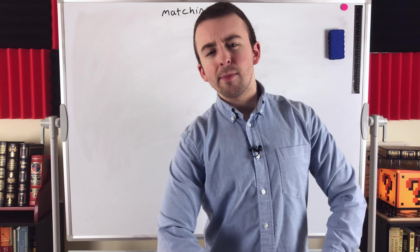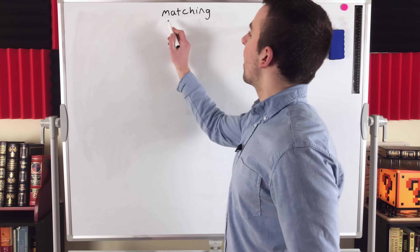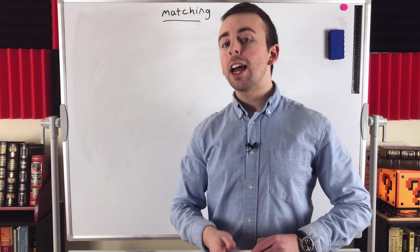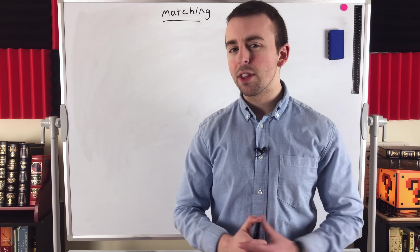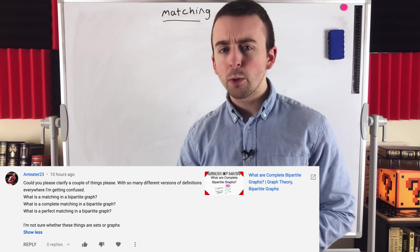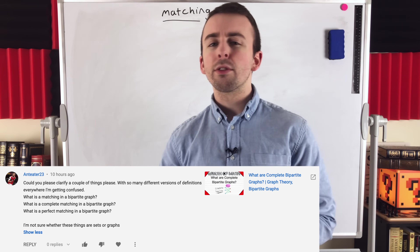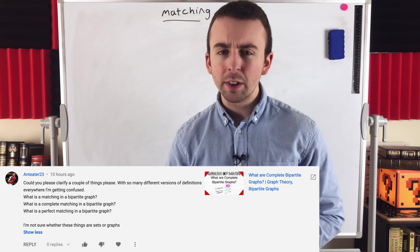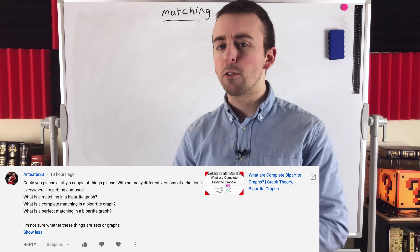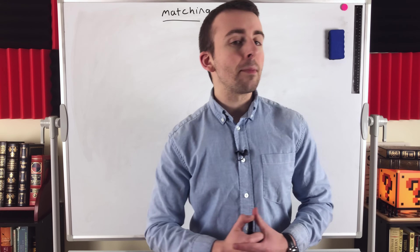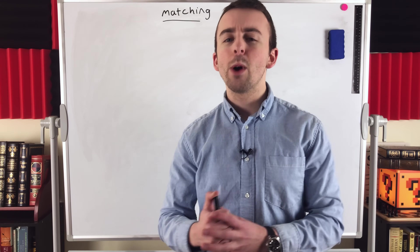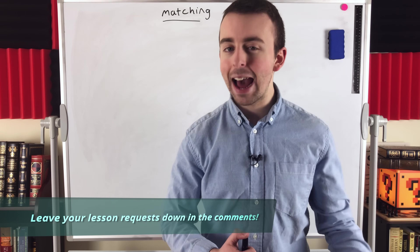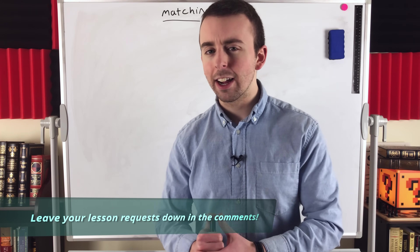Hey everyone, in today's Wrath of Math lesson, we're going to be clarifying the definition of matching, as well as some special types of matchings in graph theory. This is a viewer requested video — AntEater23 asked about matchings, complete matchings, and perfect matchings in bipartite graphs. We're going to ditch the bipartite graph part of that question, because any graph with edges can have a matching, not just bipartite graphs.